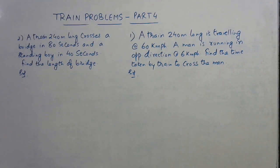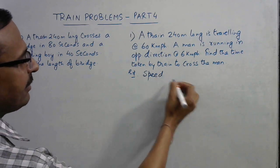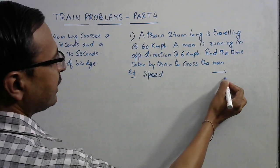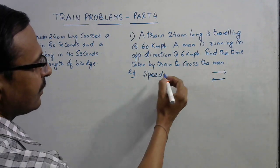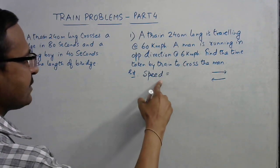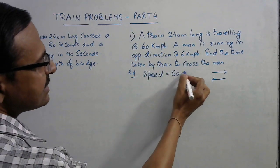In this case, first of all you need to understand that whenever the train is going like this and relative motion of the man or the train is in opposite direction, then the speed gets added. So the speed which will be used in the question is actually the sum of the two speeds: 60 plus 6, that is 66 kilometers per hour.